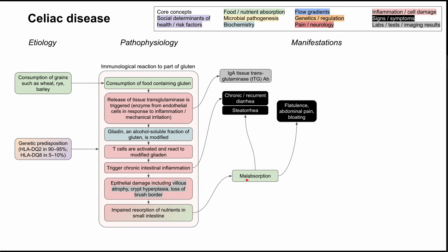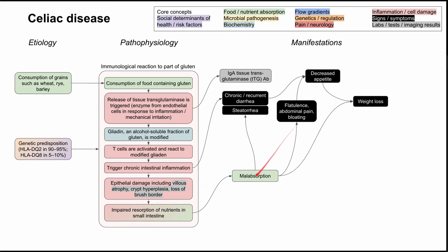When you have malabsorption, you eat nutrients but don't absorb them in the small intestine. Oligosaccharides and other sugars pass down into the colon where bacteria produce a lot of gas, resulting in flatulence, abdominal pain, and bloating. Between the chronic recurrent diarrhea, steatorrhea, flatulence, abdominal pain, and bloating, it's no surprise that patients often have decreased appetite. Between the malabsorption and decreased appetite, patients can often have weight loss.